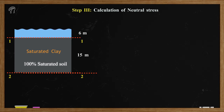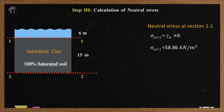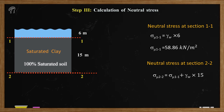So neutral stress at Section 1-1 is σ_u11 = 9.81 × 6 = 58.86 kN/m². One important thing to remember: if there were no lake water and the soil is 100% saturated, the piezometric height at Section 1-1 would be zero and there would be no pressure. This neutral stress at Section 1-1 is coming solely because of the lake water. Similarly, neutral stress at Section 2-2 is σ_u22 = σ_u11 + γ_w × 15 = 206.01 kN/m².